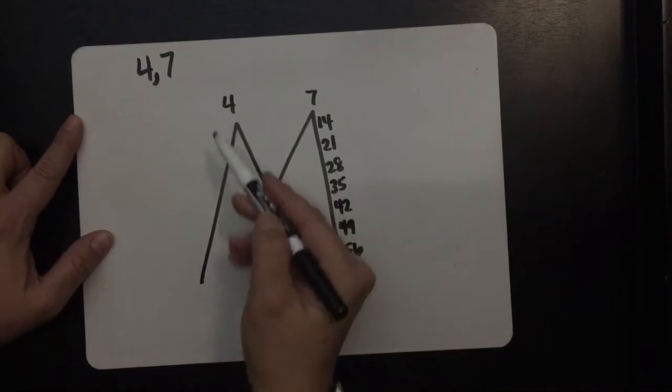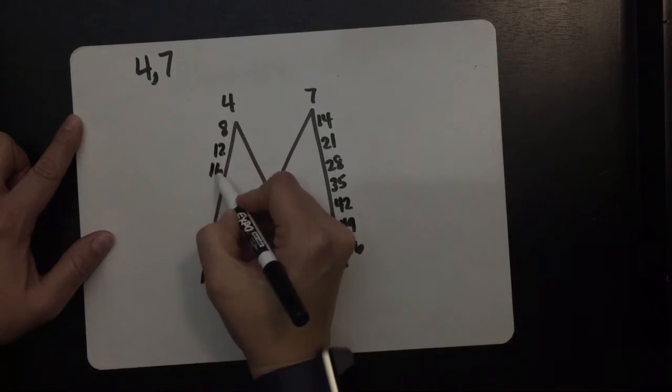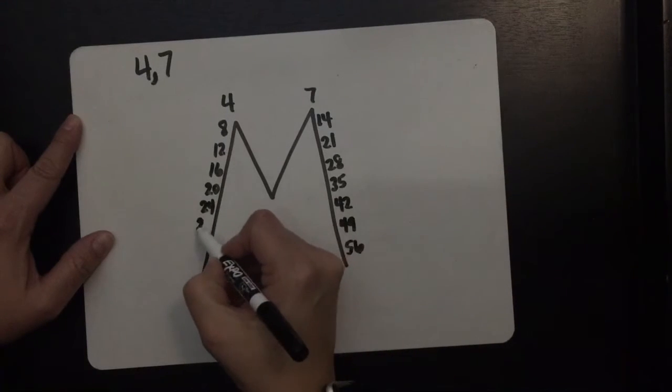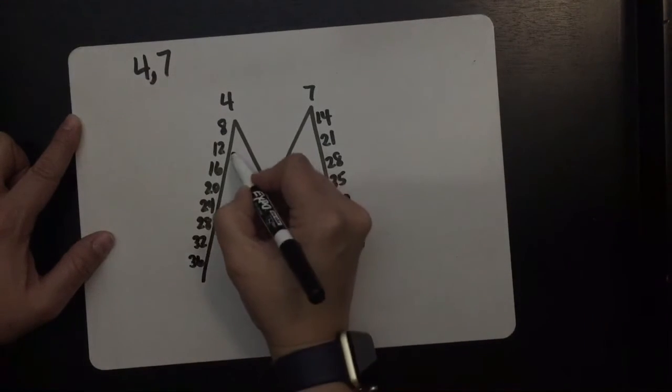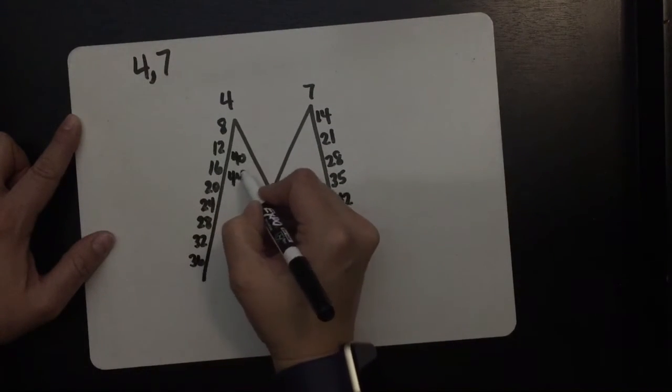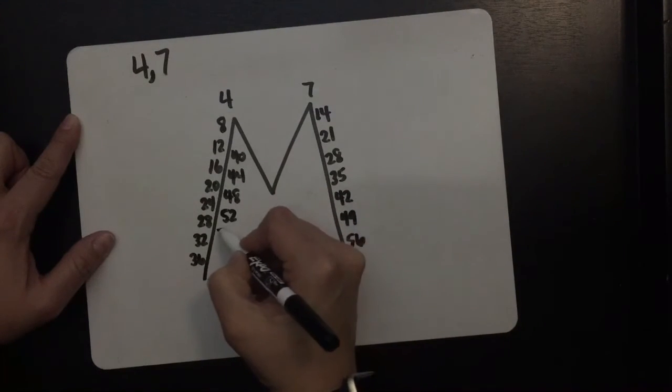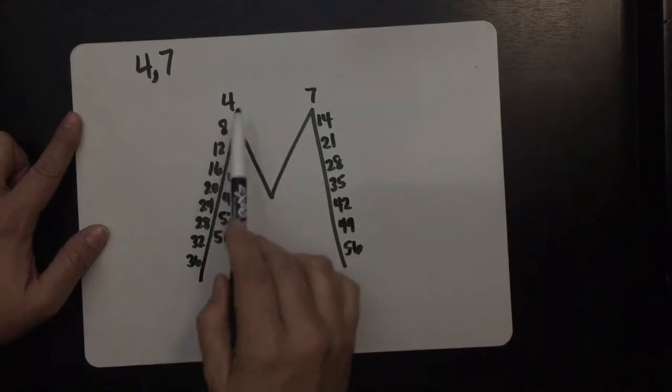So we have 4, 8, 12, 16, 20, 24, 28, 32, 36, 40, 44, 48, 52, and 56. So now that I've listed all these multiples, I want to find any multiples that 4 and 7 have in common. That means any multiples that they have that are alike.